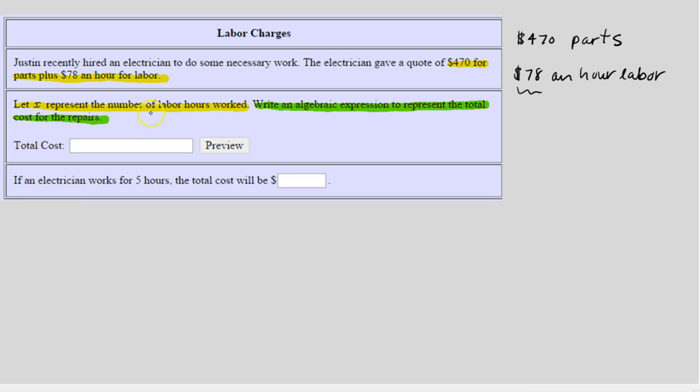Now notice the amount per hour isn't going to change, but this says X represents the number of labor hours worked. So X equals number of hours worked. So even though